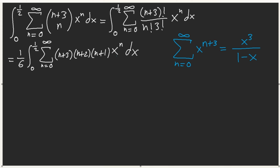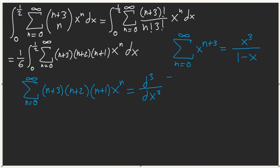If you picture this and take the derivative, you get (n+3) x^(n+2). Derive again, you get (n+2) x^(n+1). Derive a third time, you get (n+1) x^n. That's exactly what we have — it's technically the third derivative of x³/(1-x). That's literally what this is.